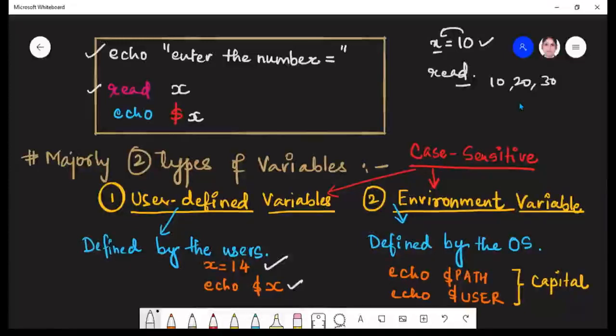The second type of variable is environment variables. They are also called system variables or system defined variables. And because they are defined by the OS, that is why they are also called system defined variables or environment variables. Here the variables are not defined by the user, but they are already present in Linux by default.